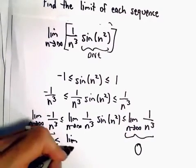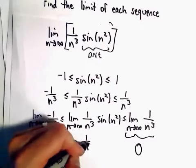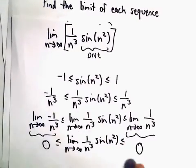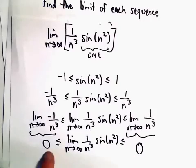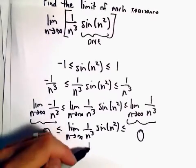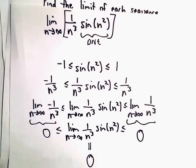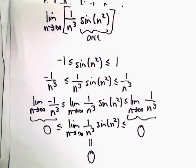We've now shown that the limit as n goes to infinity of 1 over n cubed sine of n squared is less than or equal to 0 and greater than or equal to 0. That implies that our original limit must also equal 0, using the squeeze theorem.